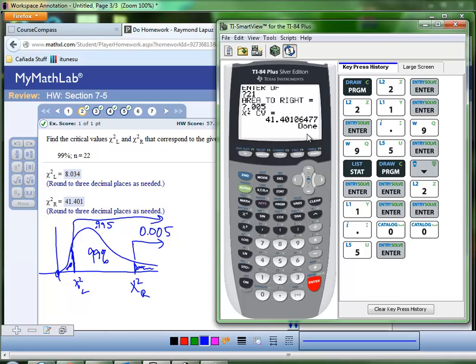Okay, so imagine now without having to use table A4, we're able to find the chi-square critical values. I think having these programs in your calculator would be very useful for your test.